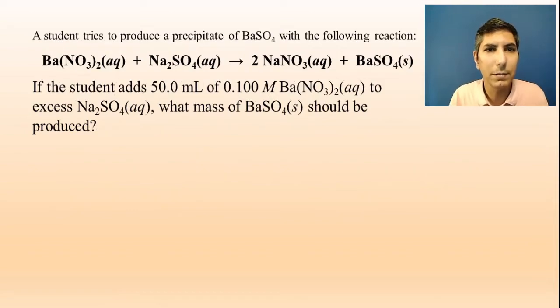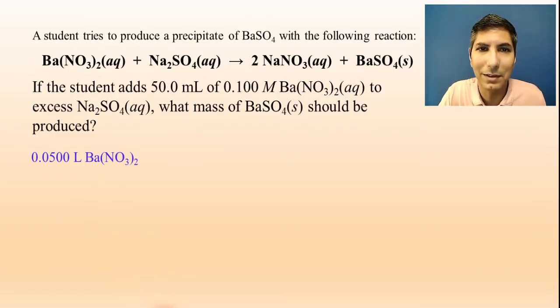A student tries to produce a precipitate of barium sulfate using the following balanced equation that you see here. If the student adds 50.0 milliliters of 0.100 molar barium nitrate solution to excess sodium sulfate solution, what mass of barium sulfate solid should be produced? Once again, we're going to start with what's given to us. It's the barium nitrate, and we start with liters. So, we should know that 50 milliliters is the same as 0.05 liters of barium nitrate. At the end of my stoichiometry here, my goal is to convert to grams, so grams of barium sulfate down here at the end.